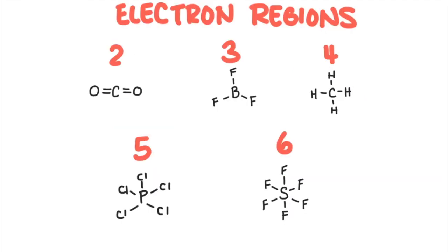We're going to look at some of the most common electron and molecular geometries, and we will describe them by name and the angles between the bonds. Each shape will have a central atom with a certain number of electron regions surrounding it. We're going to look at molecules with two, three, four, five, and six electron regions around a central atom, and for each we'll consider different molecular shapes when electron regions are lone pairs instead of bonds.